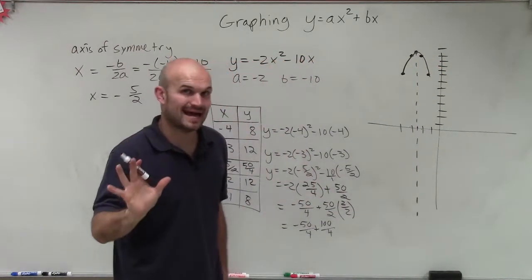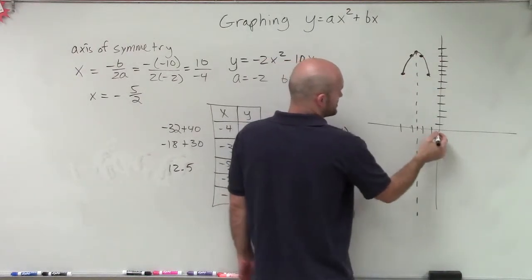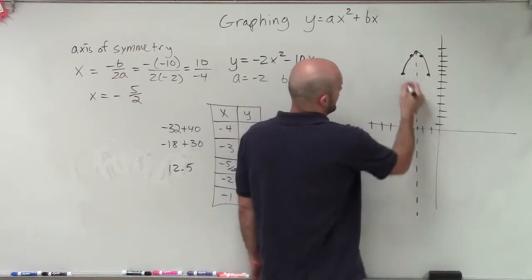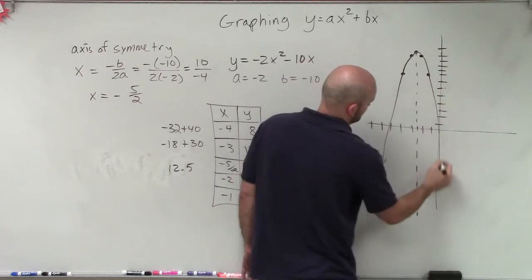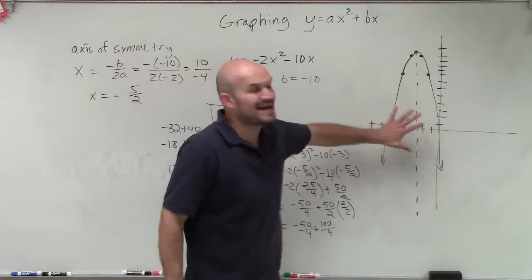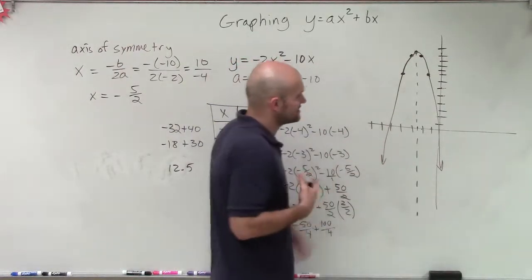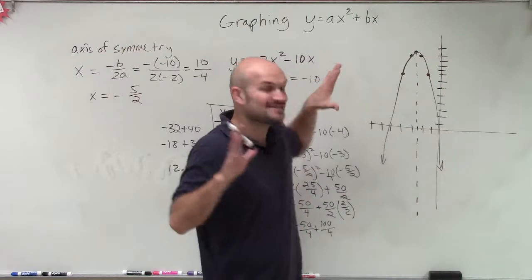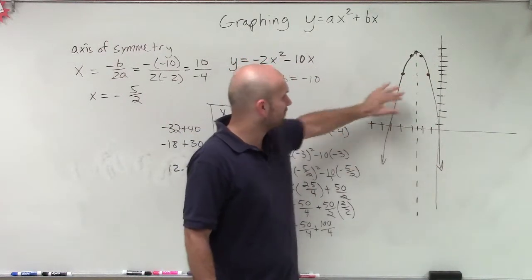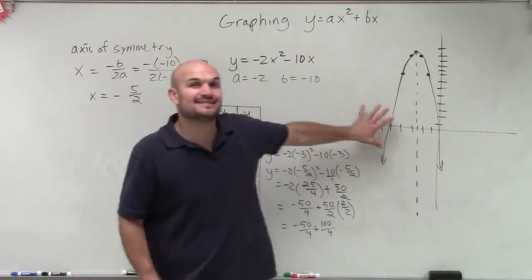For right now I'm not going to get very detailed into finding the x-intercepts. I'm just going to estimate where they are. I probably would use a graphing utility, but actually I'm just not going to get to that point. We're going to learn how to find the zeros for this in later videos. For right now, I'll leave out finding the x and y-intercepts — we will get to that in later videos.